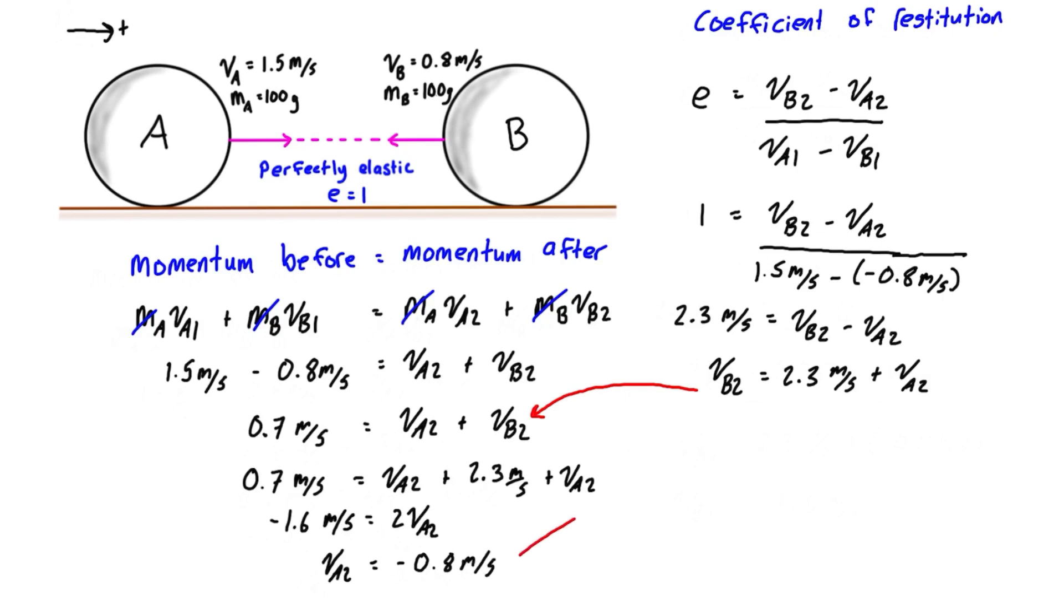We're going to take that. We're going to substitute that one back into this expression. And we're going to get VB2 is equal to 2.3 meters per second plus negative 0.8 meters per second. And we're going to find that VB2 is equal to positive 1.5 meters per second.